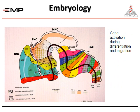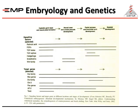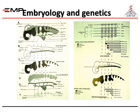Gene activation during differentiation and migration also plays a role. Different signal factors and target genes have a role in neural crest and cranial placode development, facial process and branchial arch development, and skeletal development. A diagram shows the genetics of fetal development across different stages and weeks.